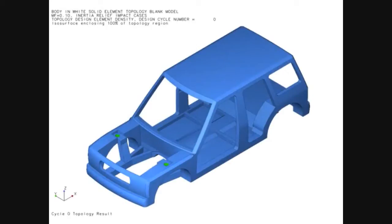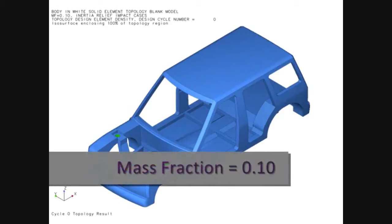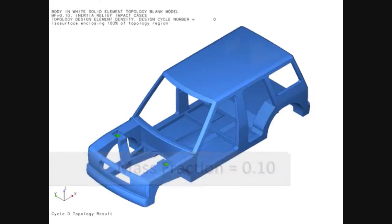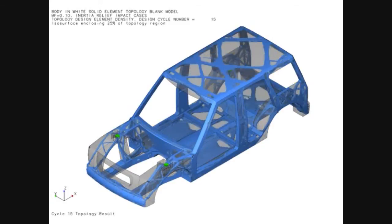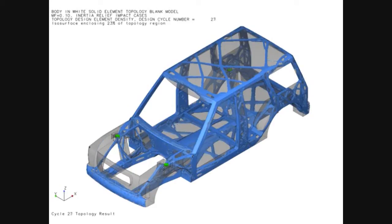Topology optimization finds the optimal distribution of a specified amount of material in a given space based on all applied loading conditions. Material will be removed from the topology region in such a way that the remaining elements provide the stiffest structure possible for specified total mass. The topology results thus provide a conceptual design that emphasizes efficient load paths.